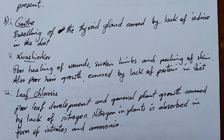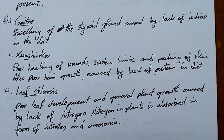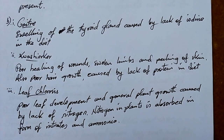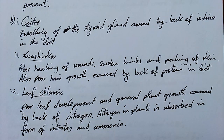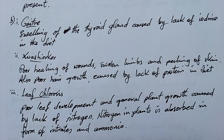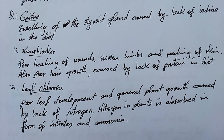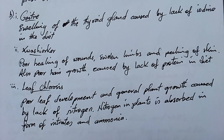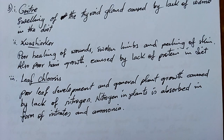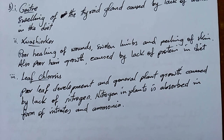Goiter: swelling of the thyroid gland caused by lack of iodine in the diet. The thyroid gland makes thyroxine, which is a very important growth hormone especially in children. Swelling means you're lacking iodine because thyroxine needs iodine to be made.